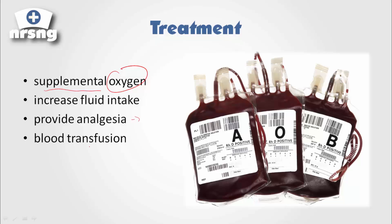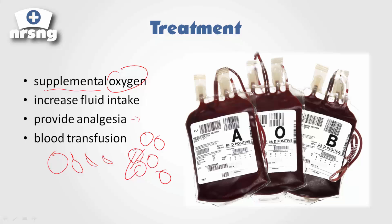We're also going to provide a blood transfusion. If their blood is half-sickled — if they have all these sickle-cell RBCs — we're going to provide them with fresh blood that has perfectly formed RBCs, and that's going to dilute those sickle-cell RBCs. So our major interventions are: supplemental oxygen, blood transfusion to get them whole and complete RBCs, analgesia for the pain, and increased fluid intake.